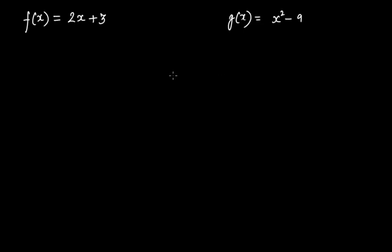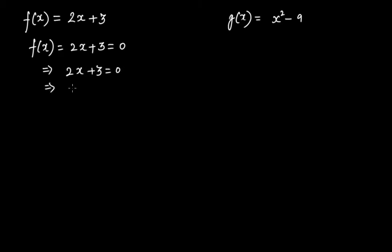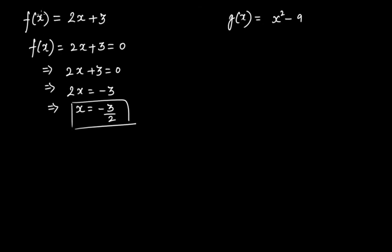When we have to find the root of a polynomial, we always equate it to zero and then solve it. So f(x) = 2x + 3 = 0, which gives 2x = -3, that is x = -3/2. This means that if you put x = -3/2 in this polynomial, the polynomial will become zero.